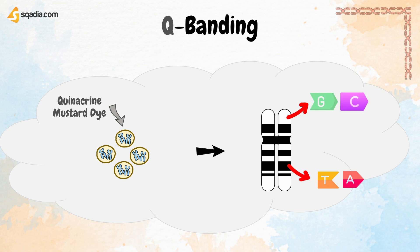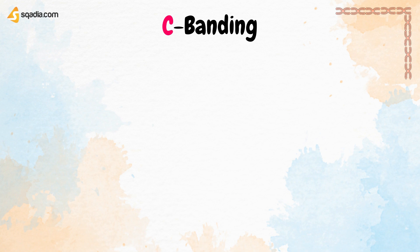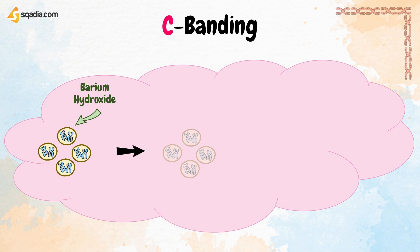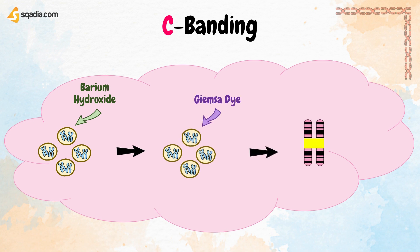Next is C-banding. In this type of banding, chromosomes are treated with barium hydroxide, then stained with Giemsa dye. Only dark bands will be formed, which constitute heterochromatin. Heterochromatin is a cytologically dense material typically found at centromeres and telomeres.